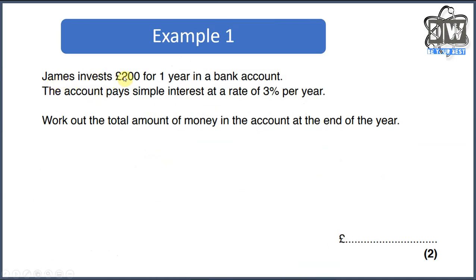So James invests £200 for one year in a bank account. The account pays simple interest at a rate of three percent per year. Work out the total amount of money in the account at the end of the year. For this question there are two ways to do it — I'm going to show you both ways. What you have to understand is that James is going to have his initial investment plus an additional three percent, so we're going to work with 103 percent.